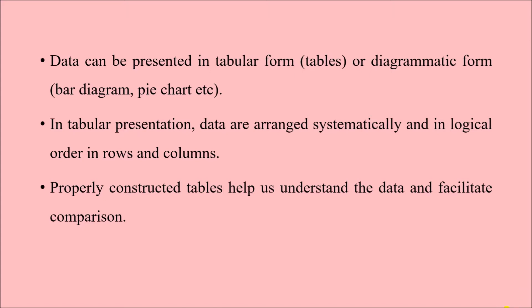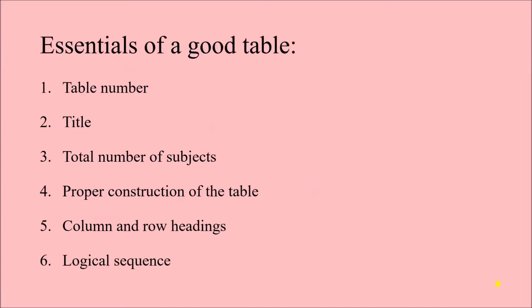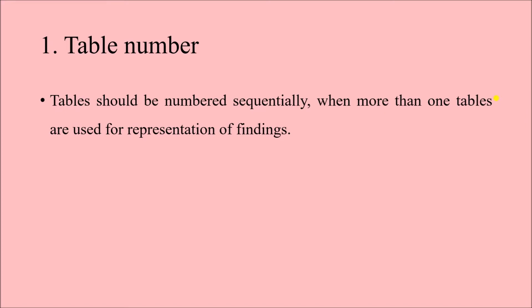What are the essentials of a good table? A table number should be there, the title has to be given, the total number of subjects must be mentioned, proper construction of the table is very important, column and row headings must be there, and there should be a logical sequence followed. All these points will be discussed individually from the next slide.